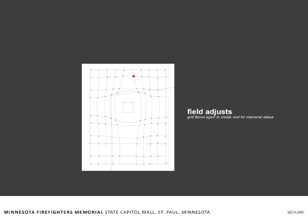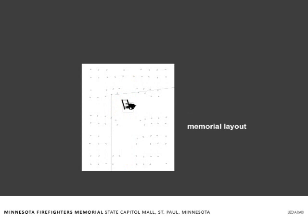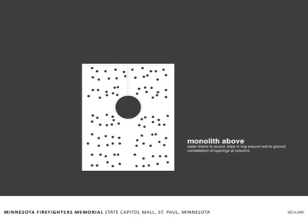That little square box in the middle denotes where the Minnesota Firefighter Memorial statue will be placed. Here shows the sculpture void — another representation of exactly where the sculpture would be placed. The memorial plan shows all the points represented and the memorial statue. This slide shows the monolith from above, the oculus, and the fact that water will drain to the oculus and drip in a ring around the statue.